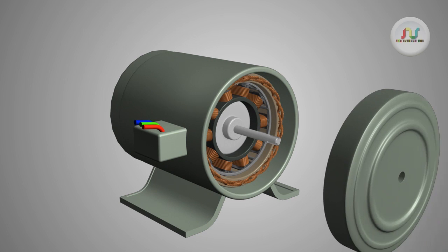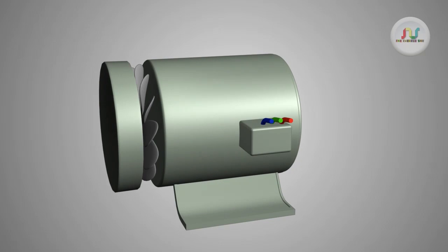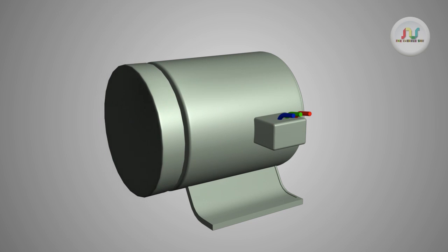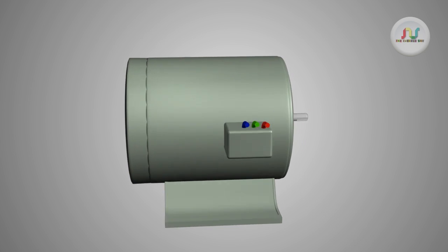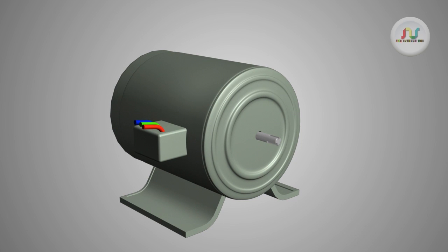The same synchronized machine can be used as a synchronized motor or as an alternator. Synchronized motors are available in a wide range, generally rated between 150 kilowatts to 15 megawatts with speed ratings from 150 to 1800 RPM.